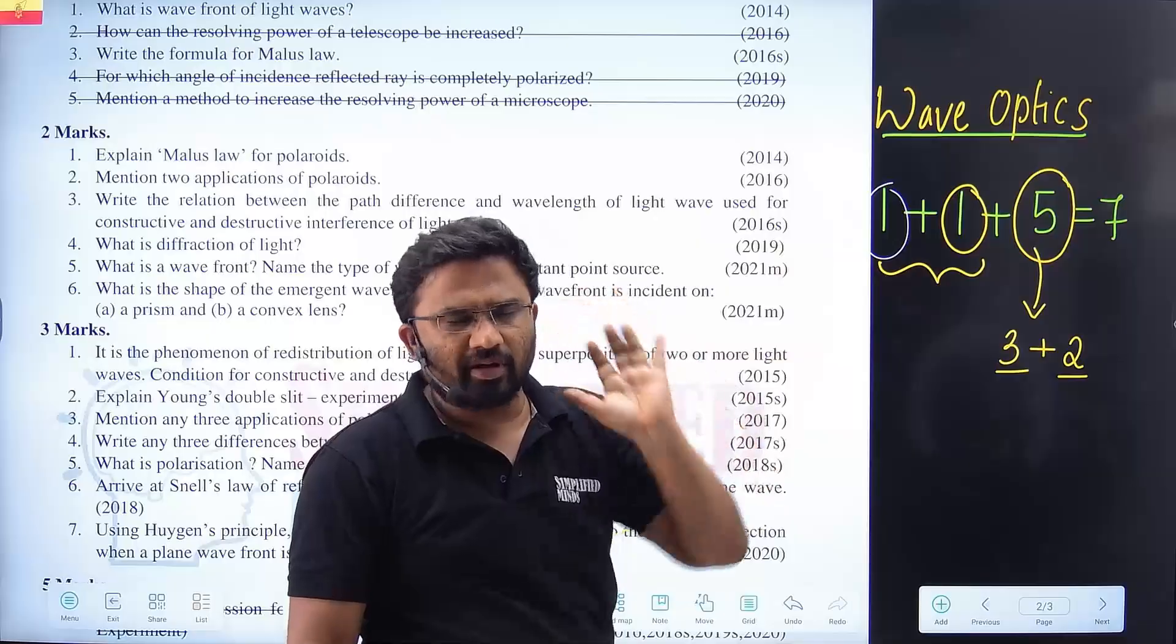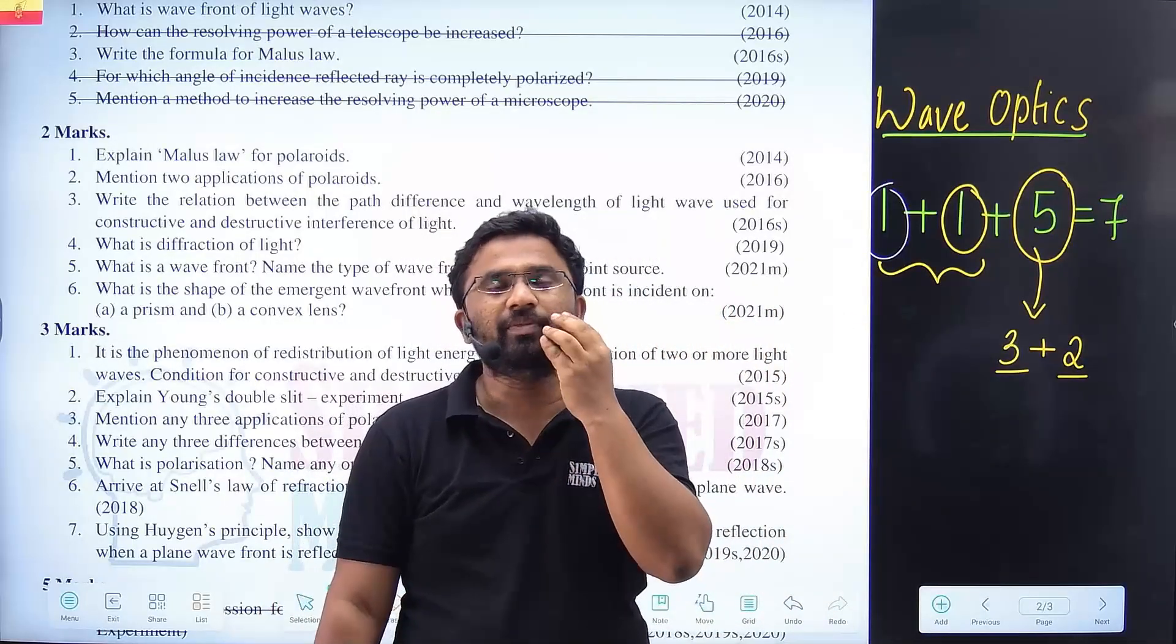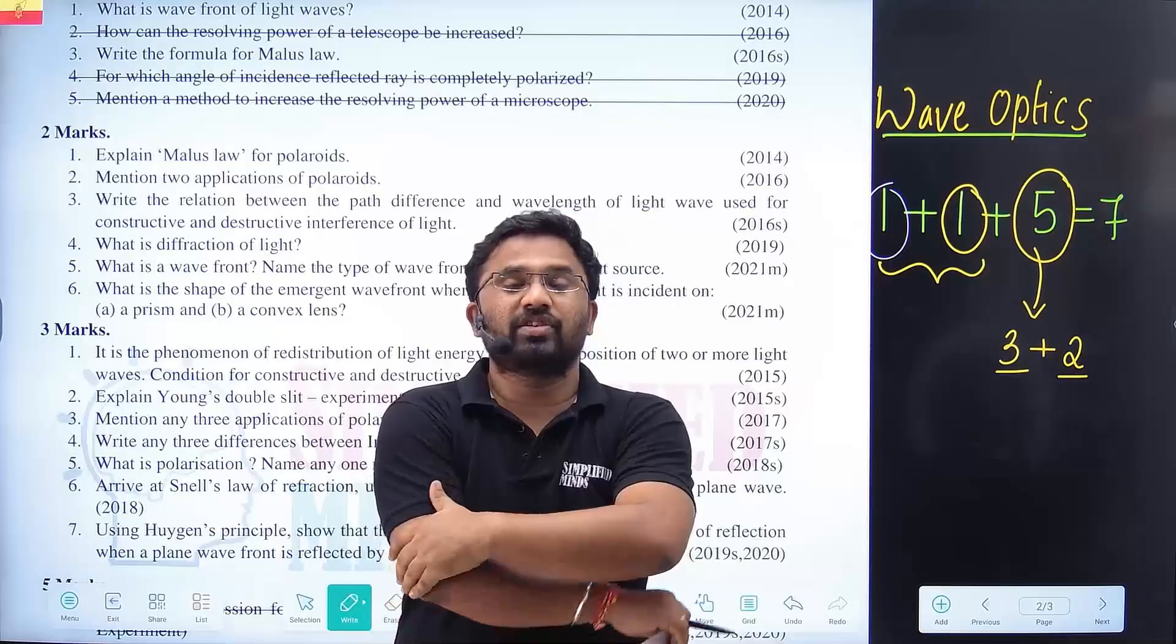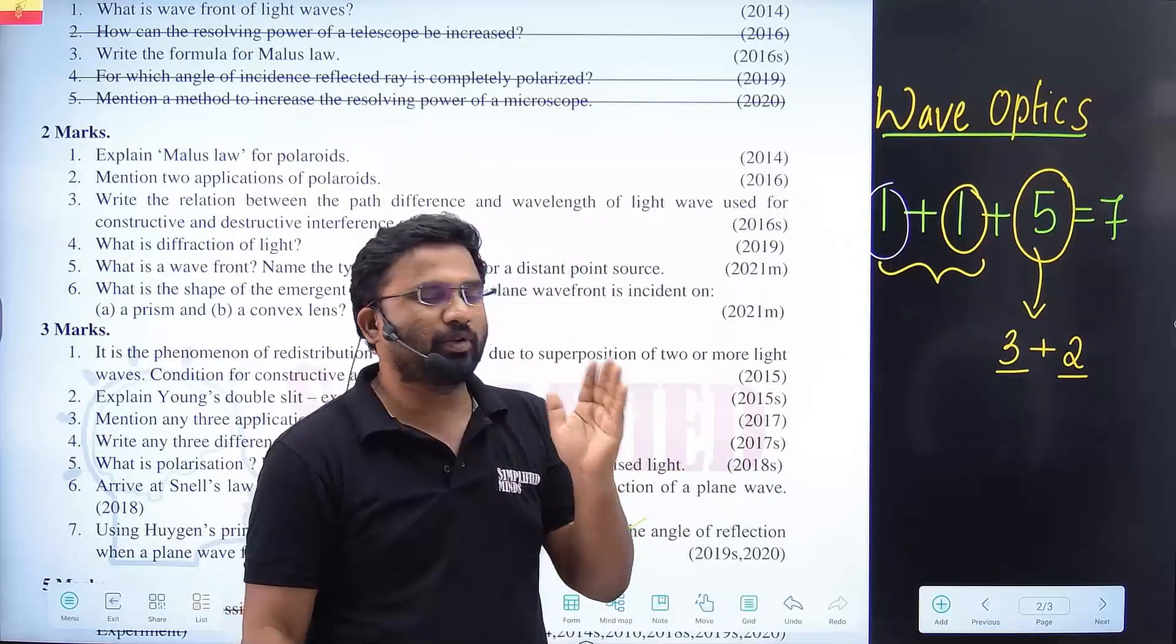The 5 marks - Huygens principle is important on the basis of reflection and refraction proof. That's it. We have the Wave Optics chapter.